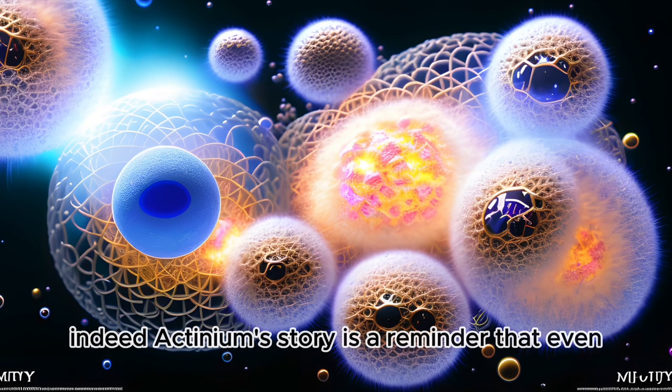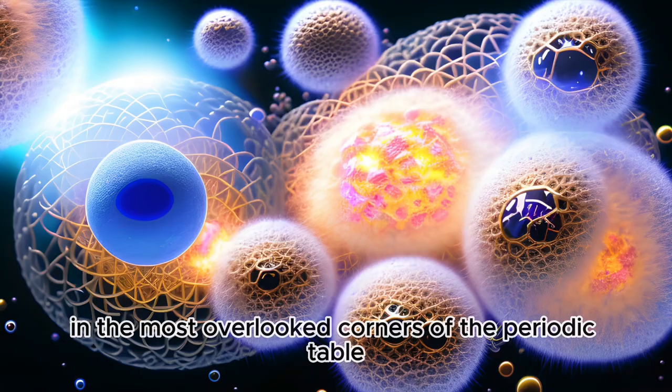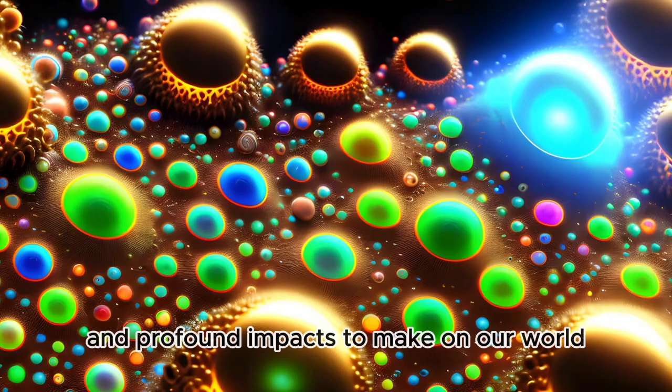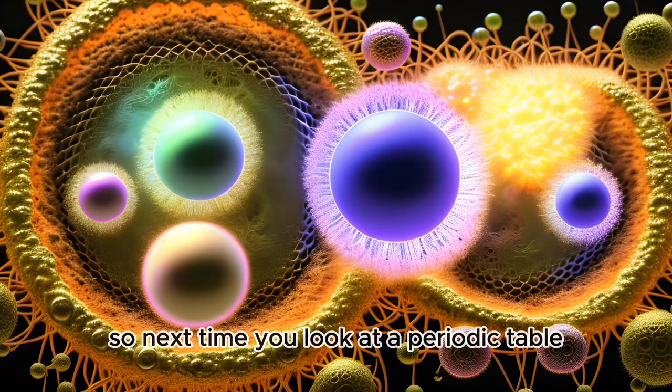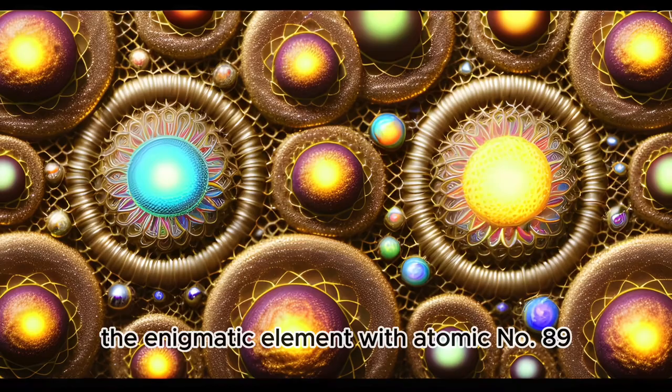Indeed, actinium's story is a reminder that even in the most overlooked corners of the periodic table, there are elements with extraordinary tales to tell and profound impacts to make on our world. The adventure of science is far from over, and elements like actinium are proof of that. So, next time you look at a periodic table, give a nod to actinium, the enigmatic element with atomic number 89.